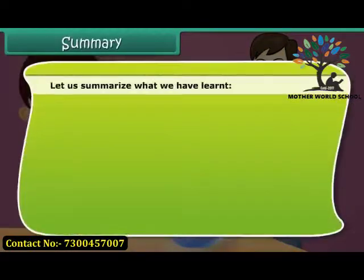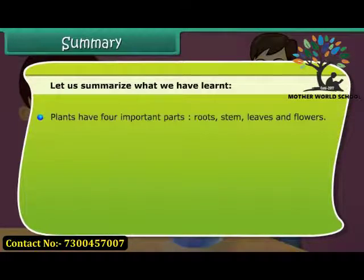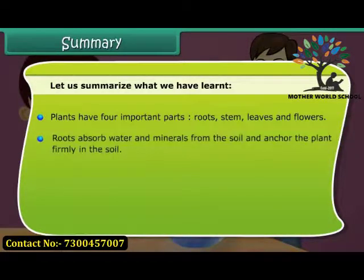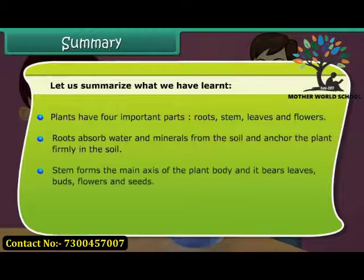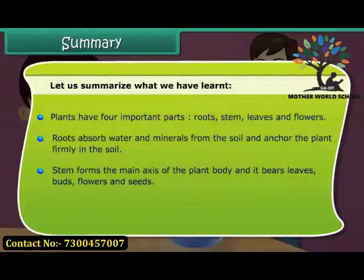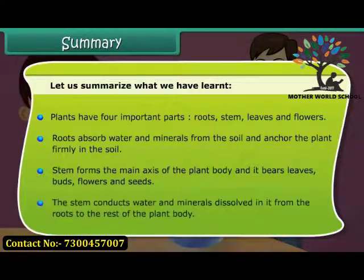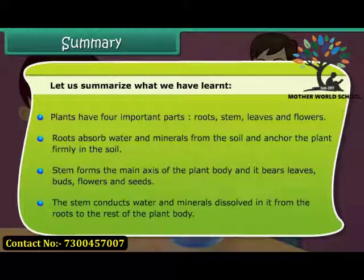Let us summarize what we have learnt. Plants have four important parts: roots, stem, leaves, and flowers. Roots absorb water and minerals from the soil and anchor the plant firmly in the soil. The stem forms the main axis of the plant body and bears leaves, buds, flowers, and seeds. The stem conducts water and minerals dissolved in it from the roots to the rest of the plant body.